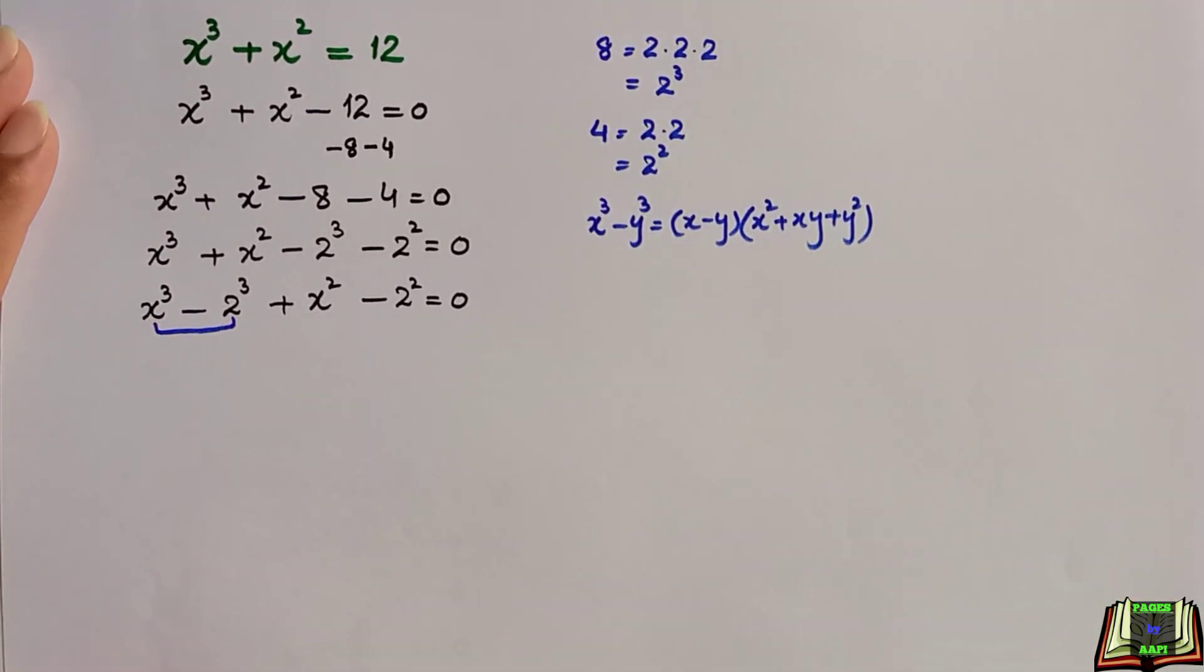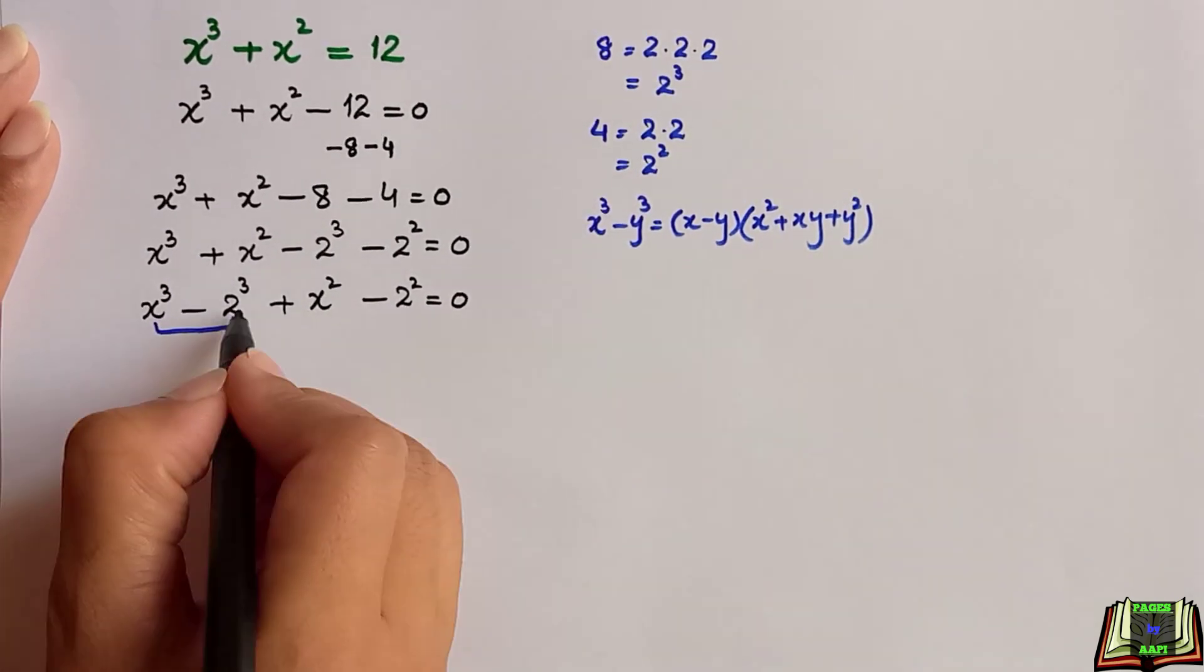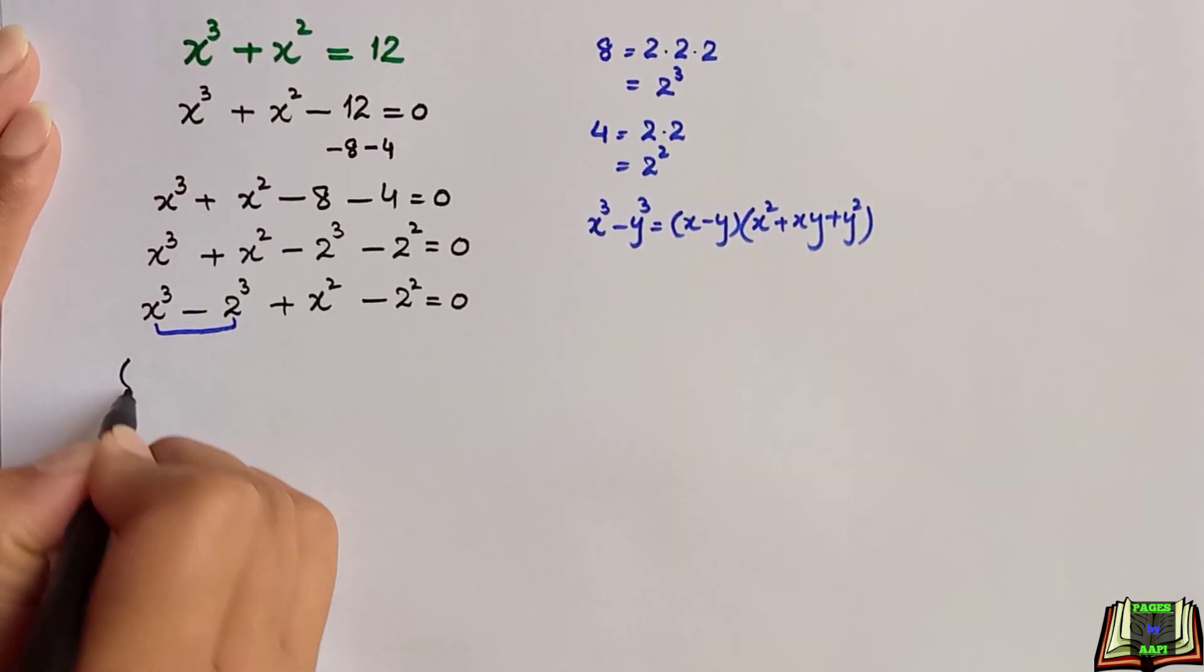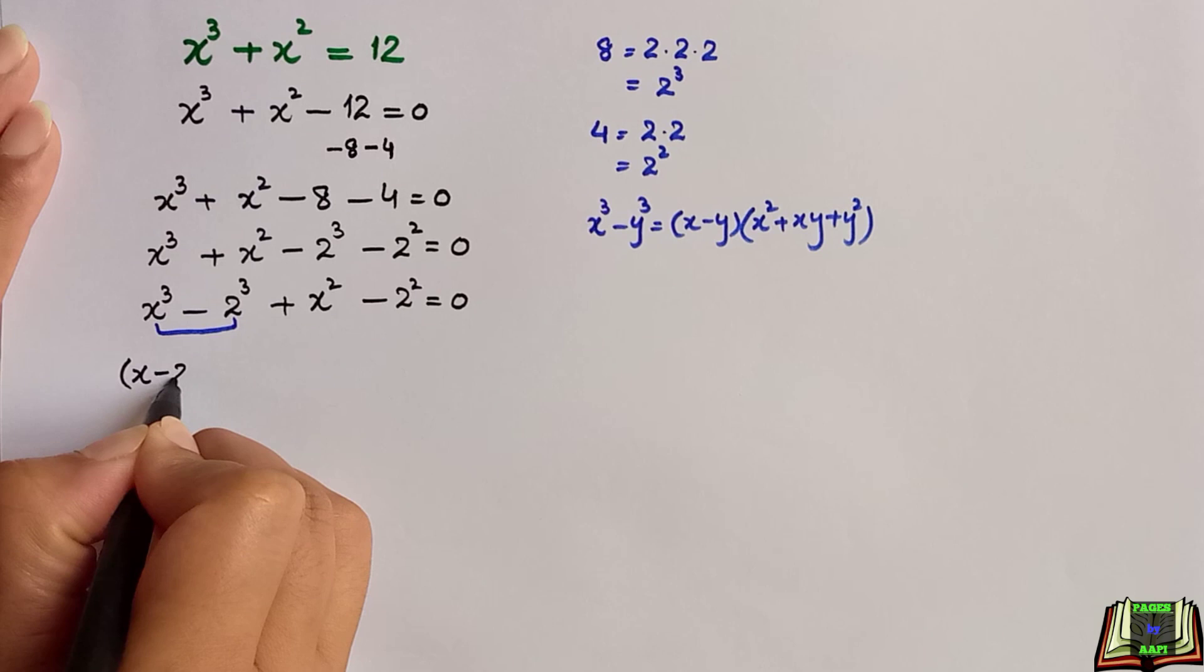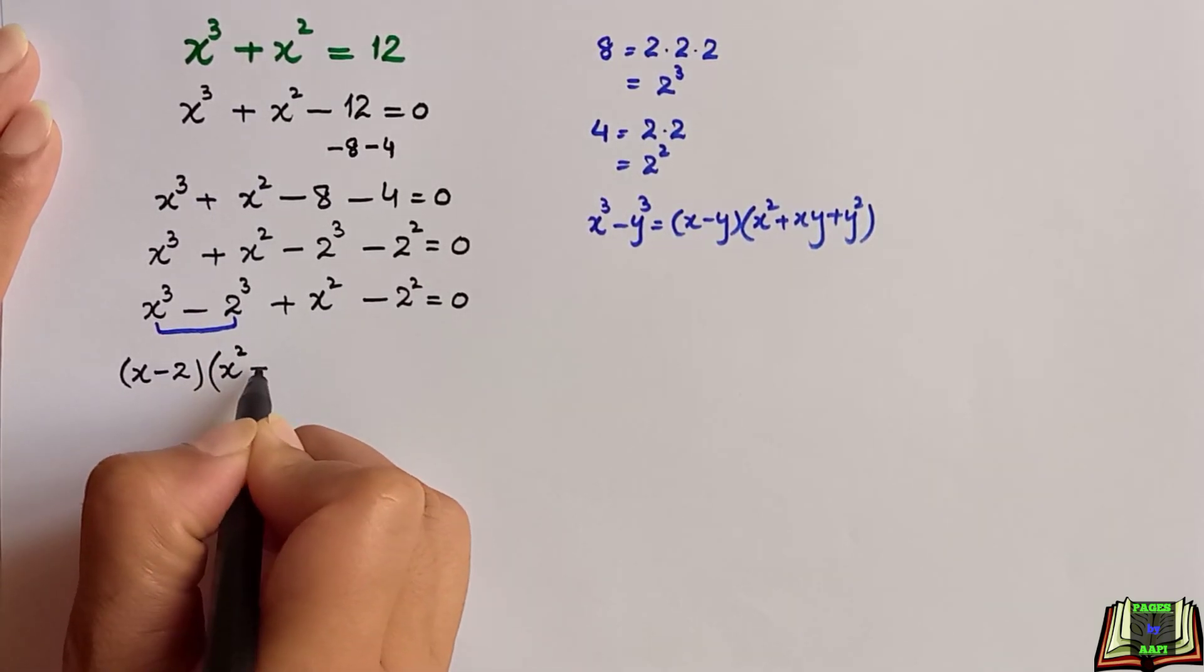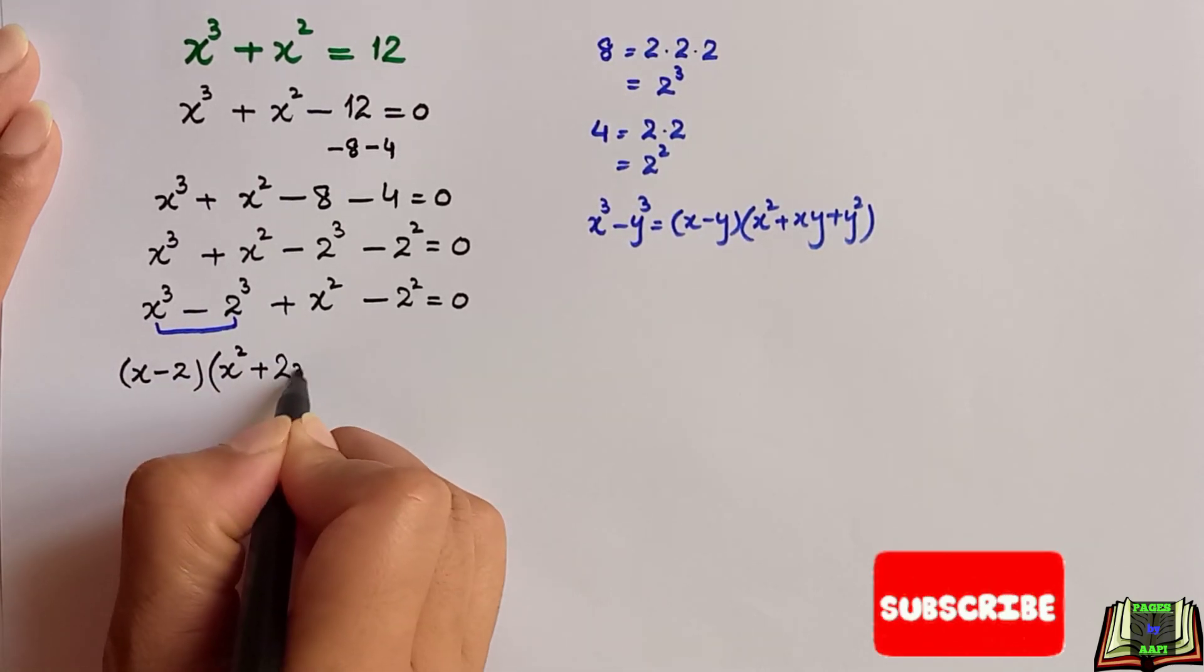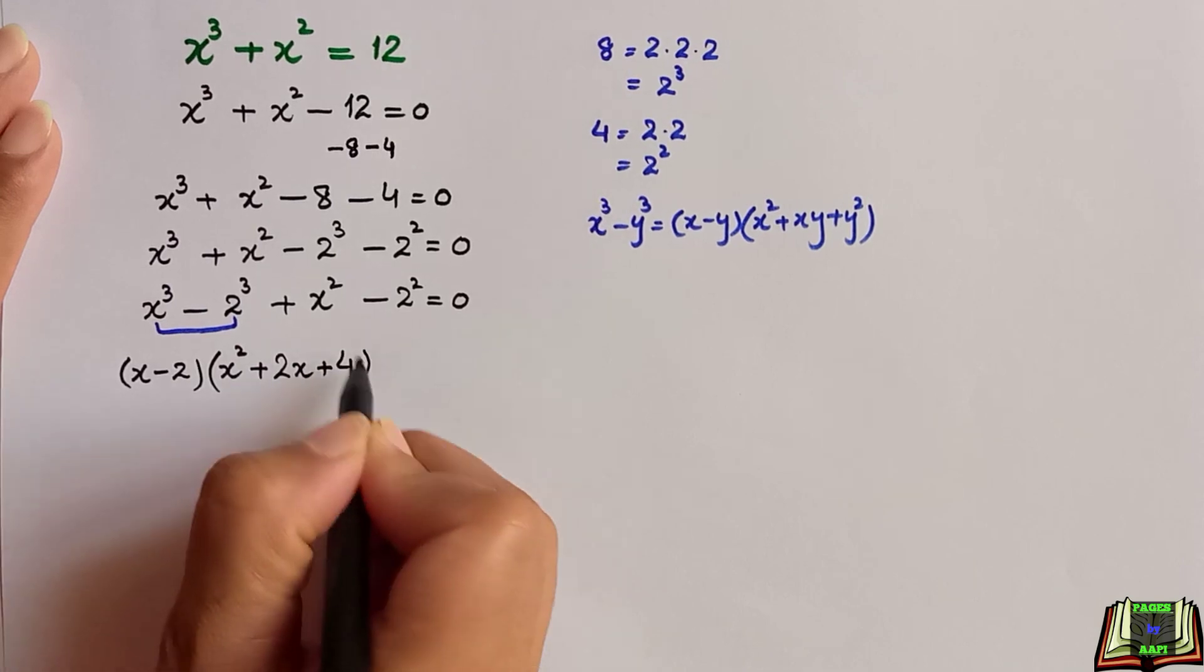So using this formula we will simplify x cube minus 2 cube, but in this case y is 2. So x minus y means x minus 2, then x square plus xy which is 2x, plus y square which is 4.